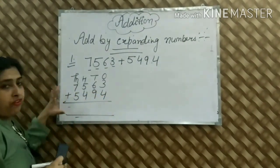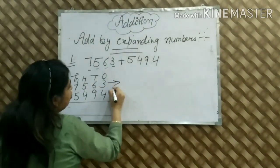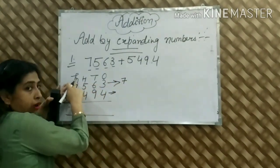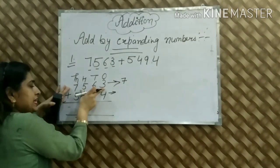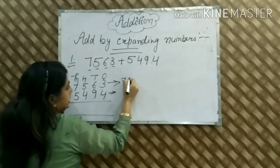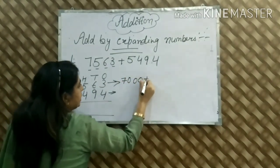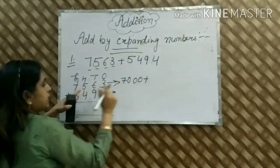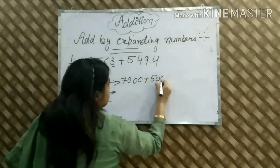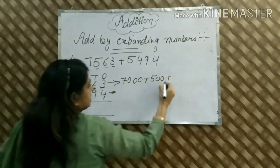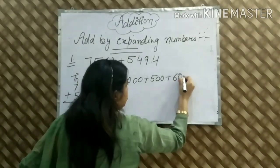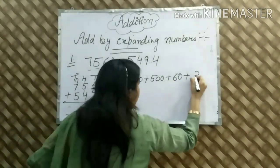This is our short form. Now this is how we write in expanding form. Seven is our thousands place — after 7 there are 3 digits, so we write 7,000. Next we have 5 — after 5 there are 2 digits, so we write 500. Next we have 6 — after 6 there is only 1 digit, so we write 60. And last is 3.